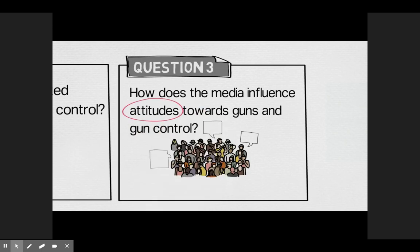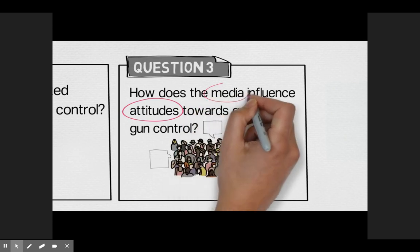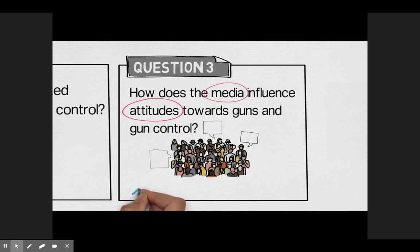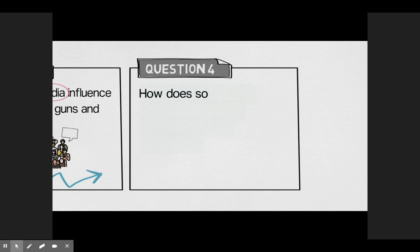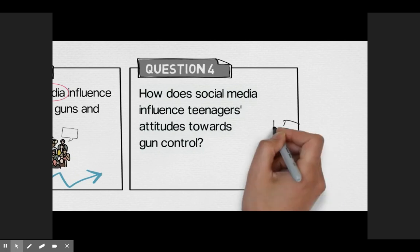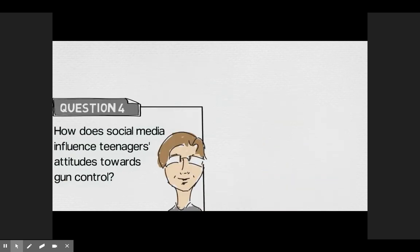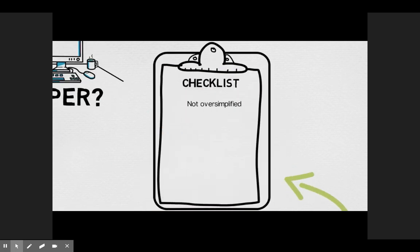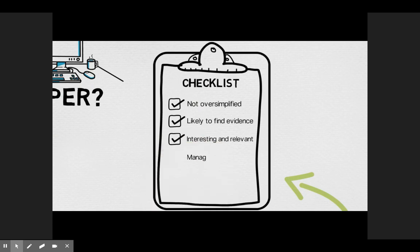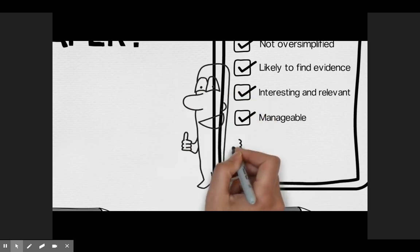When you say 'attitudes,' what are you talking about? The attitudes of any person — old people, young people, all nationalities? What about media? Do you mean newspapers, news channels, Twitter, Facebook, or blogs? That's a lot of territory to cover in a single paper. What about this: 'How does social media influence teenagers' attitudes towards gun control?' Personally, I feel more comfortable with this question. A — it's not oversimplified, there is no yes or no answer. B — you can locate evidence, whether social, psychological, or statistical, that would help answer this question. C — it's an interesting and relevant question that you might already be following in the news and on your social media channels. And D — this question is manageable. I believe you could answer it within the confines of the assignment.